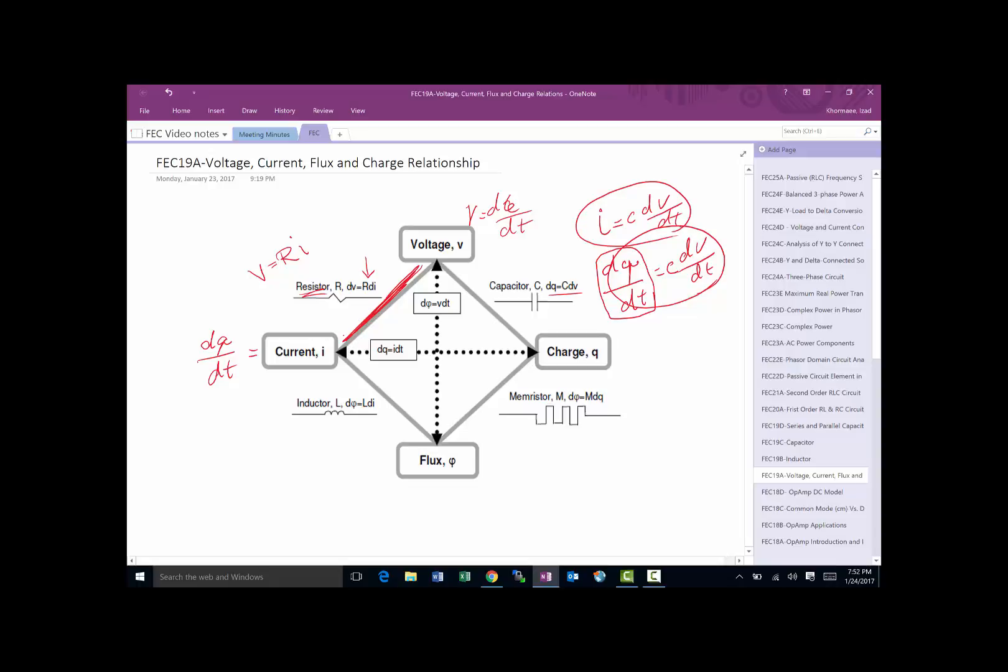L being the inductance, if we rewrite that equation as change in flux with respect to time equals L dI/dt, then this is voltage, V equals L dI/dt. This is the relationship between voltage and current of an inductor. L is referred to as an inductor, and we'll talk about that as well.